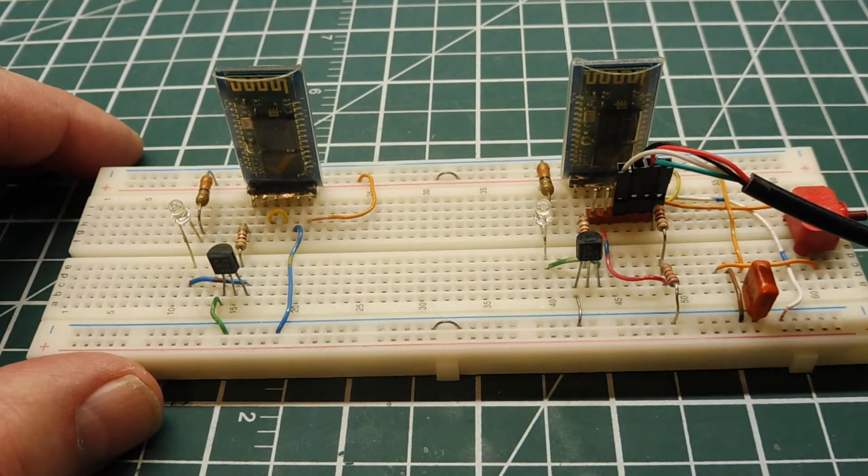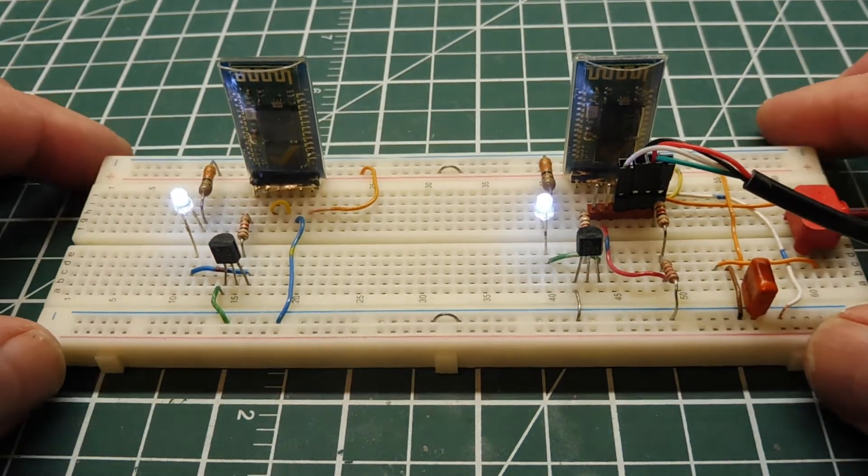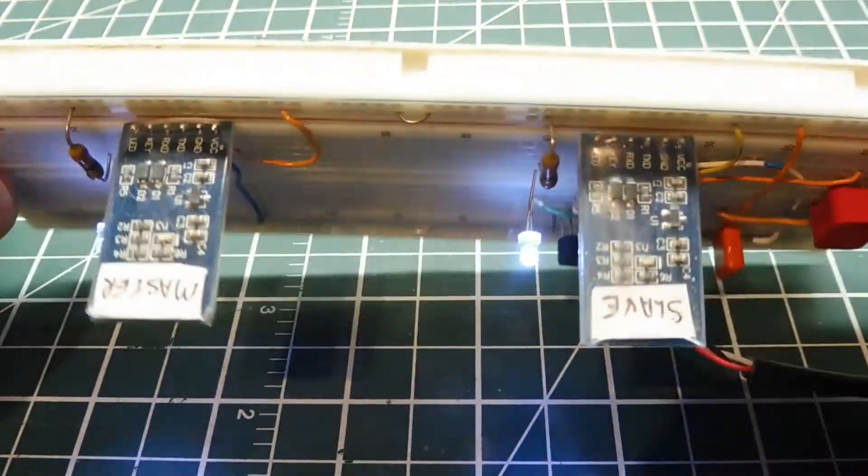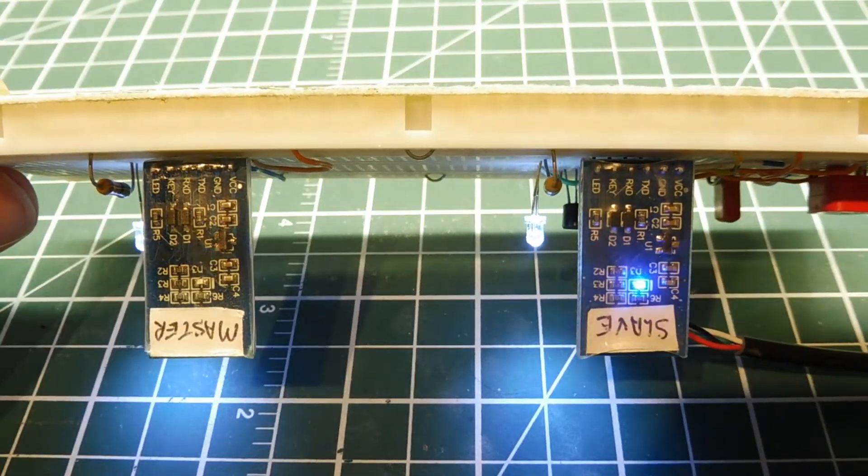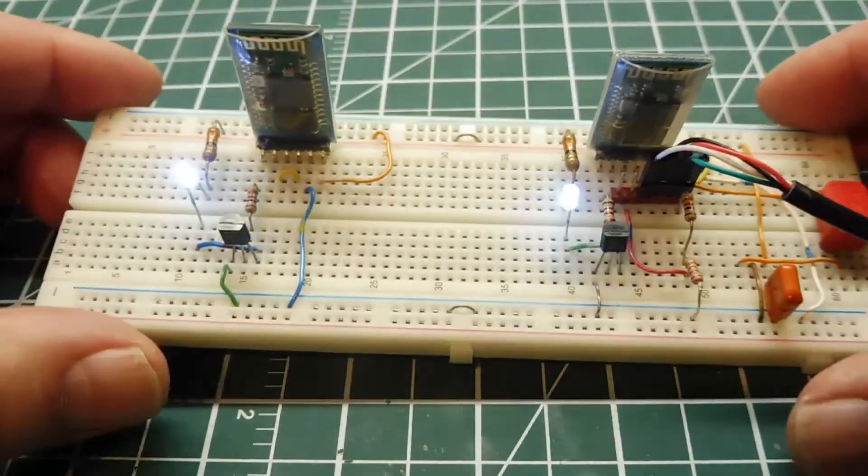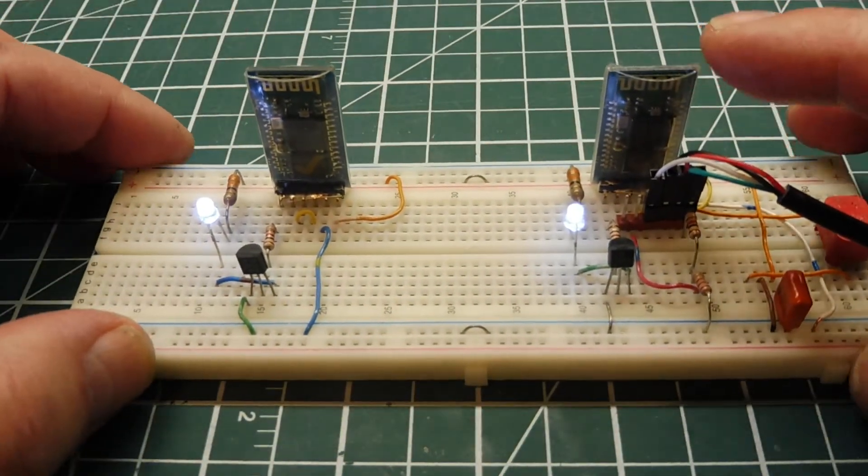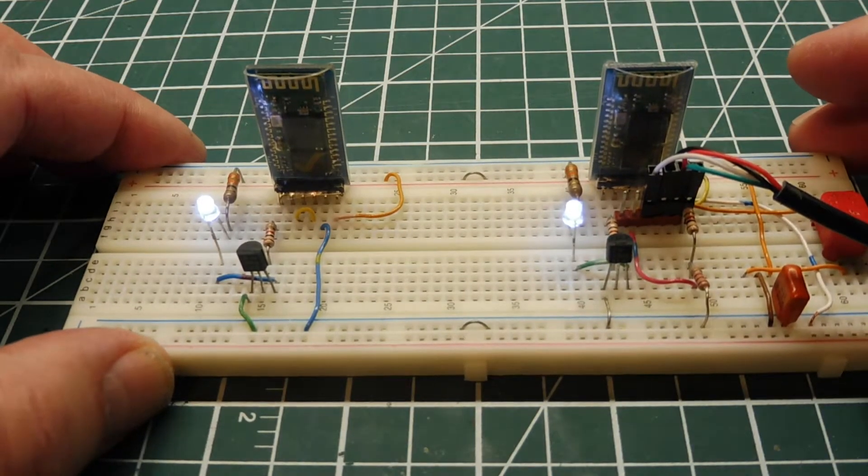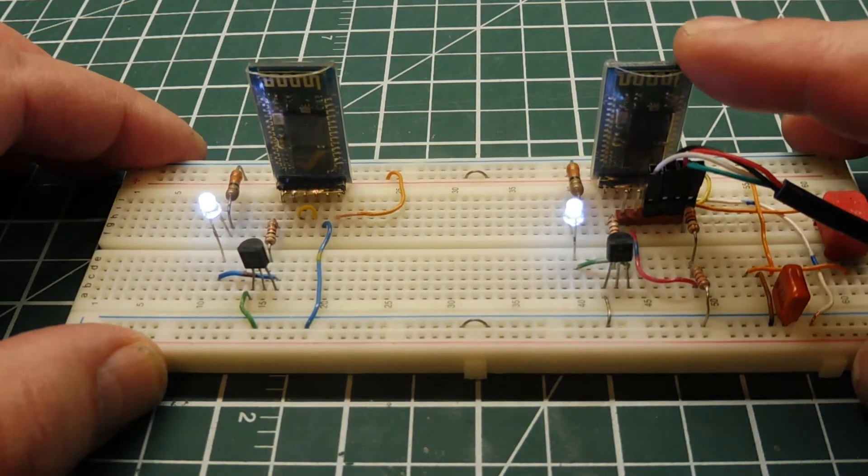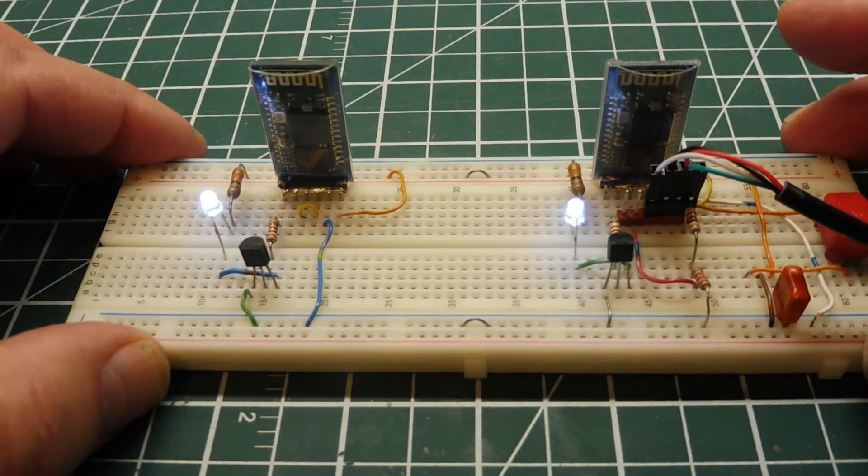Now if I power up my Bluetooth modules, you'll see that they'll pair and the two LEDs will come on. I have one configured as a master and another one configured as a slave. So now I have a link between these two Bluetooth modules so I can send data from one module to the other. There's some protocols in place that'll detect any errors, and if there's any errors detected it'll ask for a retry, and if it's only single bit errors they'll correct those errors.